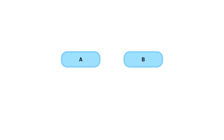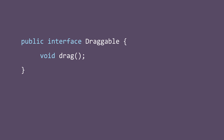Now, what is an interface really? An interface is a type similar to a class, but it only includes method declarations — no implementation. It has no code. It only defines the capabilities that a class should have.